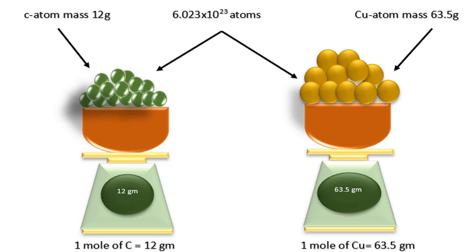So what we understand with the help of this figure is that 1 mole of any element — whether it is carbon or copper — the weight can be different, but the number of atoms will be the same. If we replace copper with any other element, the weight will be different but the number of atoms will remain the same. So this is the mole concept: 1 mole of any element will have Avogadro's number of atoms, which is the number of atoms in 1 mole of carbon.